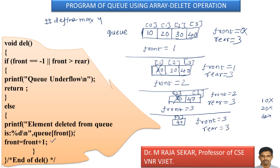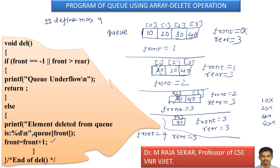Again, let me say this function is called. If front equal to equal to minus 1: front is 3, so 3 equal to equal to minus 1 is not true. Front greater than rear: 3 greater than 3 is false. Both are false, so we go to the else block. Element deleted from Q is Q of front — front is 3, Q[3] is 40. Element deleted from Q is 40. This 40 is deleted. Front equal to front plus 1: previous value of front is 3, so front equals 4. Your front is 4, rear is 3.